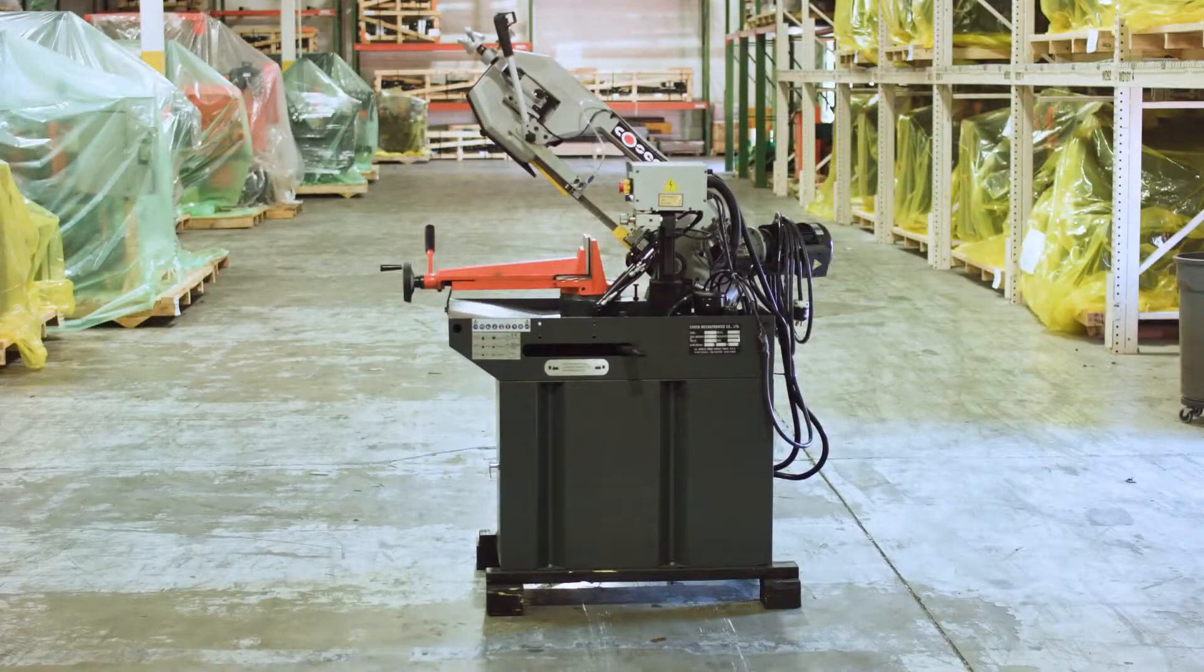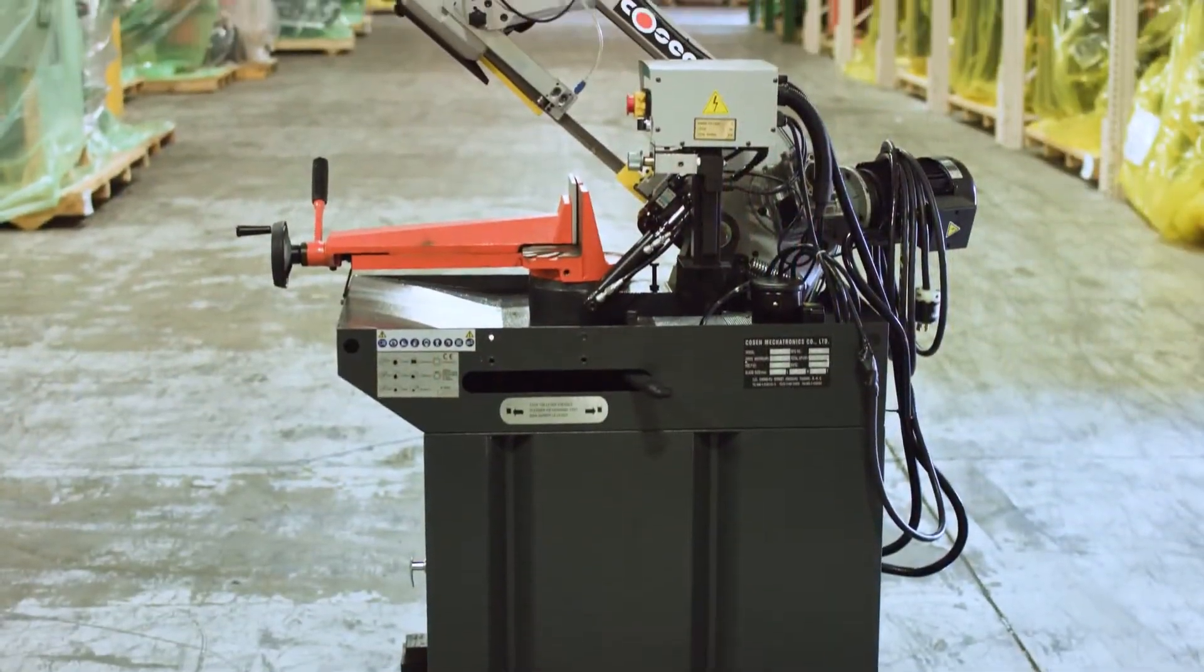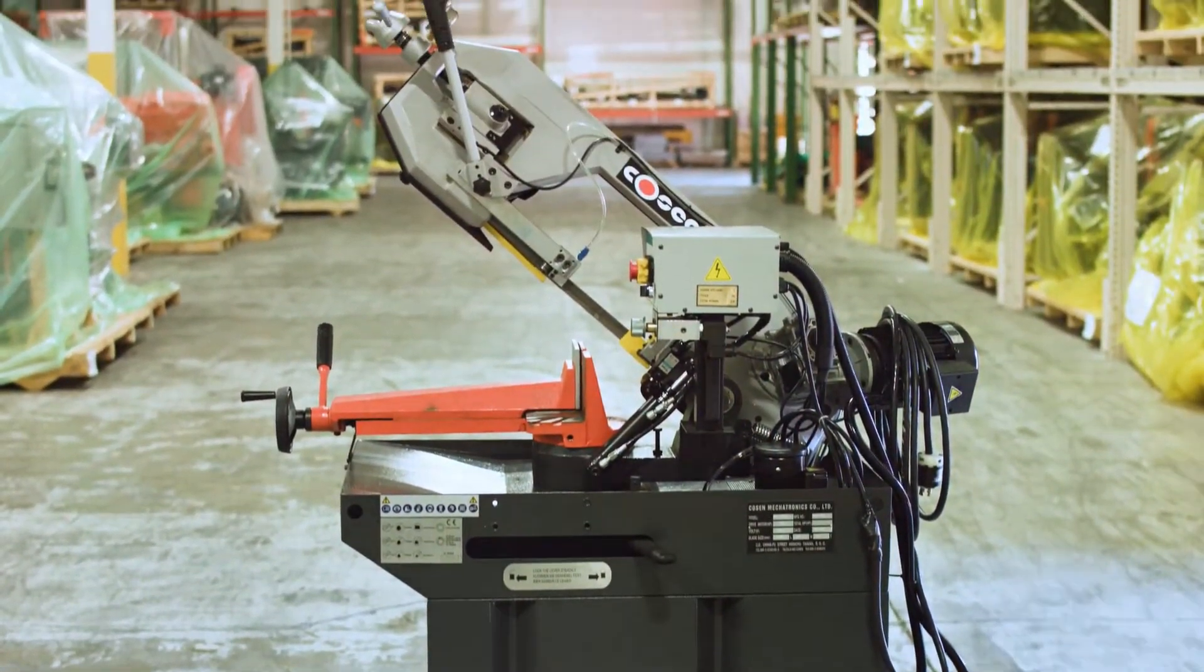The Kozen MH270M is a manual horizontal pivot mitering bandsaw, which has a round capacity of up to 8.9 inches and a rectangular capacity of up to 6 inches high and 9.45 inches wide.